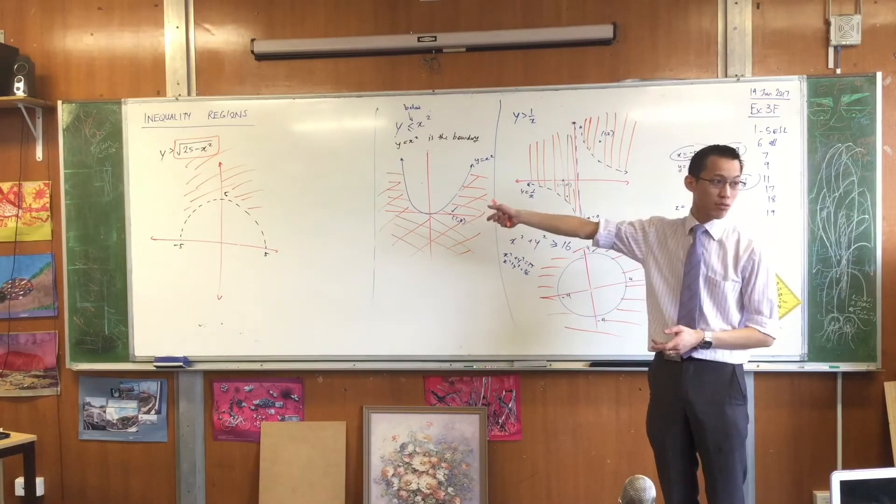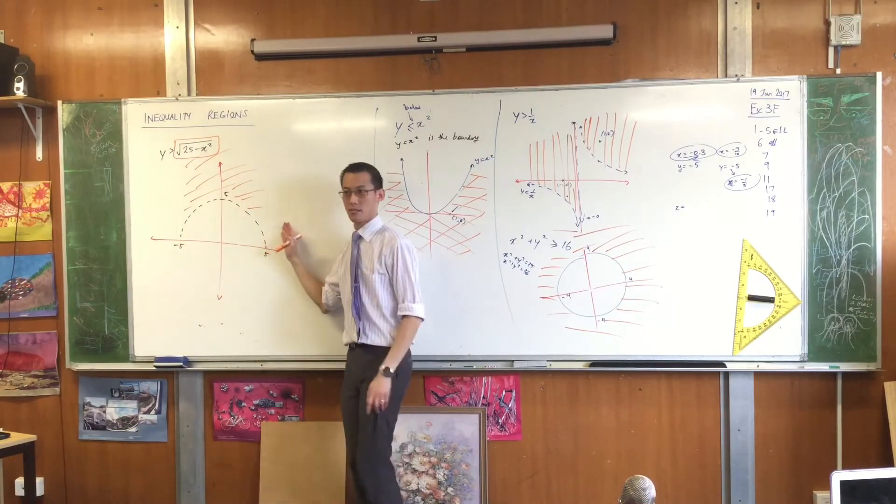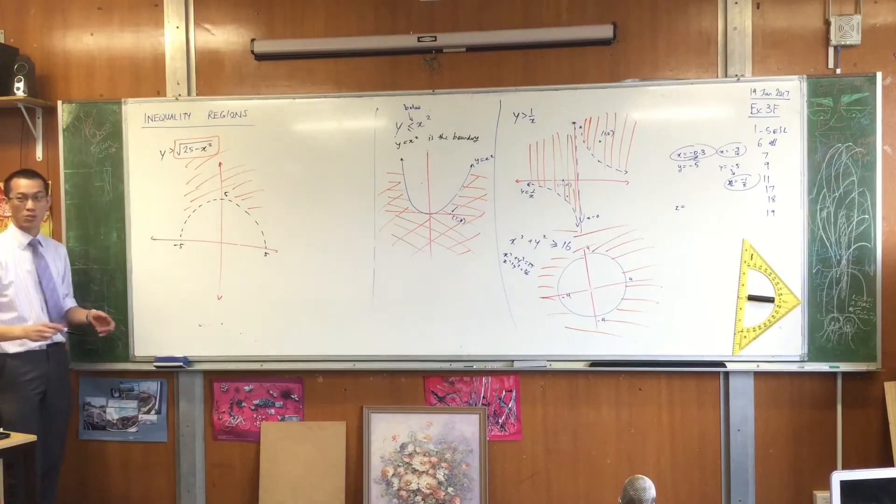You can see it. I've drawn it, right? It's got to be greater than negative 5, but it's got to be less than positive 5, okay? So therefore, implied here are some extra boundaries.